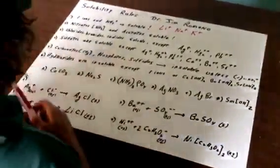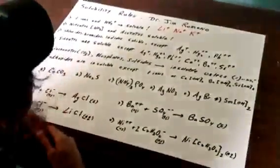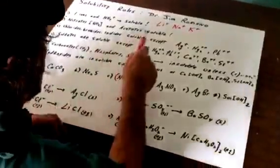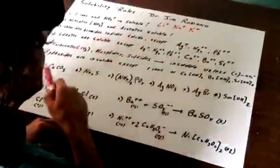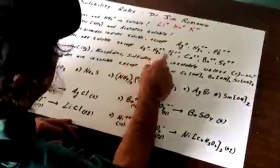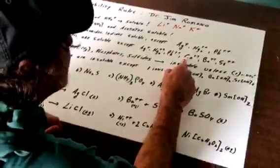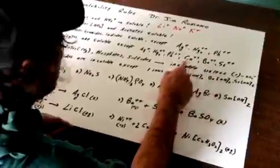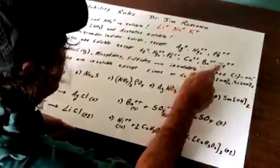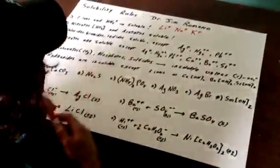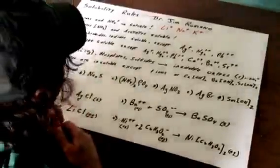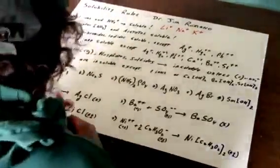The next rule is sulfates are soluble as well except if they contain the same evil trio of silver, mercury, lead or I call this CABS, C-A-B-S, calcium, barium, and strontium sulfate would be not soluble. All right fair enough, that's easy enough.